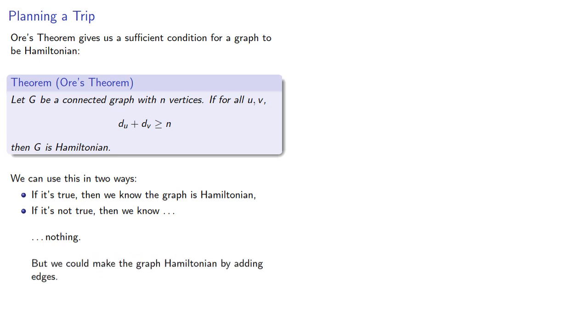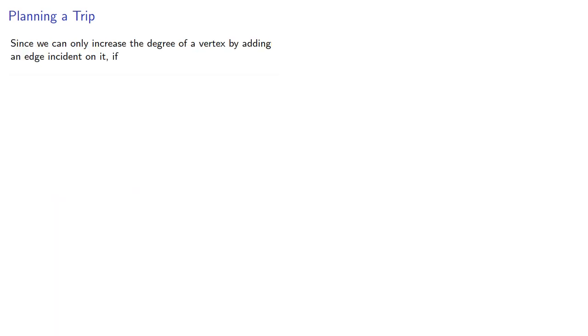But we can make the graph Hamiltonian by adding edges. Since we can only increase the degree of a vertex by adding an edge incident on it, if the degree sum is strictly less than n and u, v are already joined, we can't change the sum.